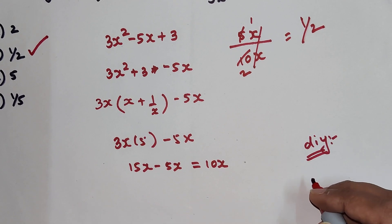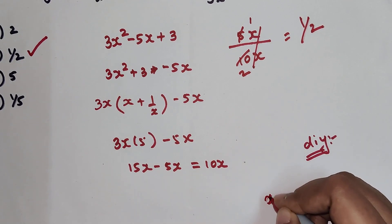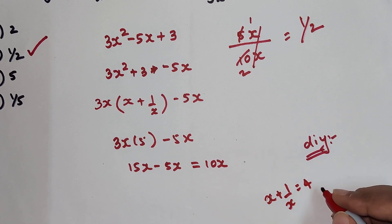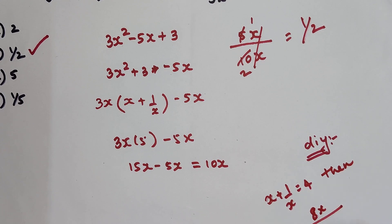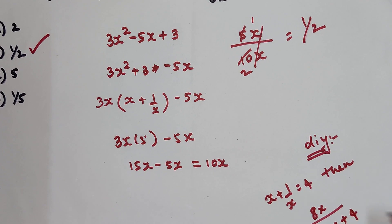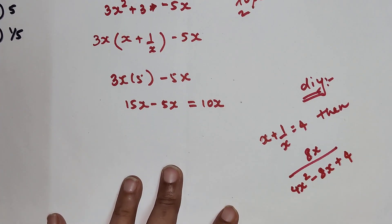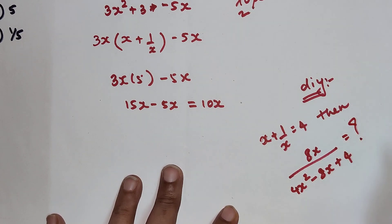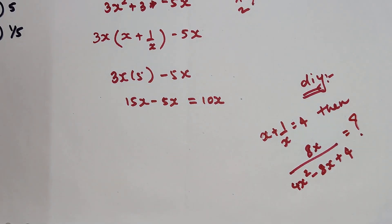So now let's come to your DIY. If we have x plus 1 upon x is equal to 4, then you will have to tell me what is the value of 8x upon 4x square minus 8x plus 4. This is your question. Do let me know your answers in the comment section.